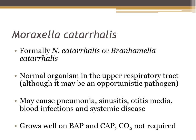Moraxella catarrhalis was formerly known as Neisseria catarrhalis or Branhamella catarrhalis, but has been called Moraxella catarrhalis for the last 20 years. It is normal flora in the upper respiratory tract but can be an opportunistic pathogen — pathogenicity is determined by the amount of growth relative to normal flora. It can cause pneumonia, sinusitis (it is the number one cause), otitis media, blood infections, and systemic disease, especially in kids or adults with chronic sinus problems. It grows well on both blood and chocolate agar; CO2 is not required. On blood and chocolate it appears pink and pushes like a hockey puck.